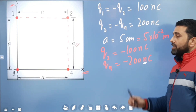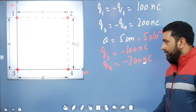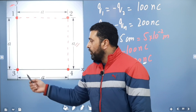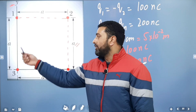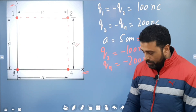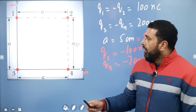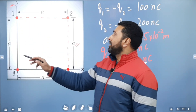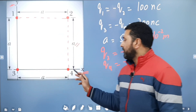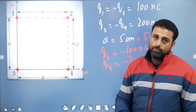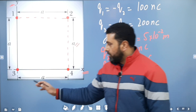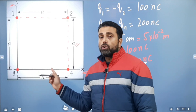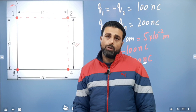Remember nano means 10 to the power minus 9. We have to find the X component and Y component of the net force on particle 3. Particle 3 will experience three forces: one from particle 1, one from particle 2, and one from particle 4. We need to find the X and Y components of the net force.